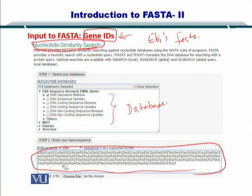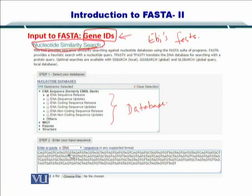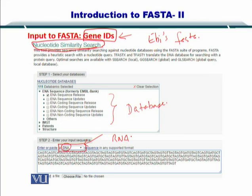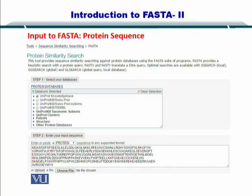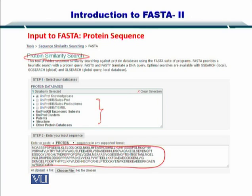If you look closely, you will see a drop-down list box here which states DNA. Of course, you can also put RNA here. So what if you want to do a protein sequence analysis? To compare protein sequences, you go to the protein similarity search on the same portal, and you select your database here.